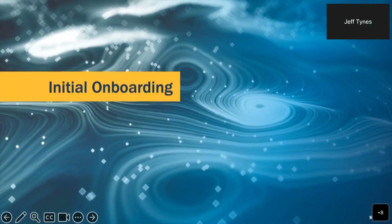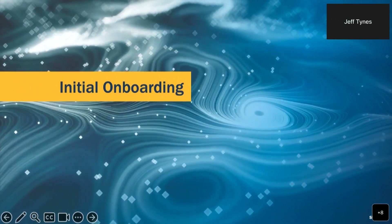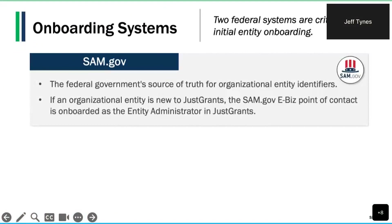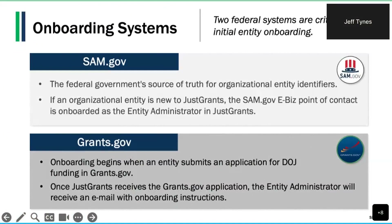Let's take a look at initial onboarding — how a new entity creates their JustGrants account through the application submission process. For entities new to JustGrants, the initial entity onboarding process occurs during application submission and requires the following federal systems for critical onboarding data. Organizational entities seeking federal funding must maintain an active registration in SAM.gov. If an organizational entity is new to JustGrants, the SAM.gov eBiz point of contact is automatically onboarded as the entity administrator. The initial entity onboarding process is triggered when an entity submits their application for DOJ funding in Grants.gov, where entities first apply as part of a two-step grant application process.